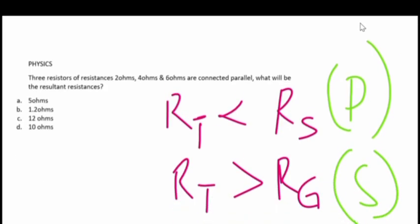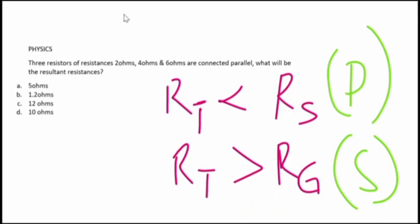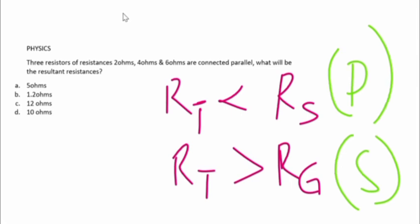Taking a look at the following questions, these questions will help us understand how we can rightly use the elimination method to solve past questions. This is a physics question: three resistors of resistances 2 ohms, 4 ohms and 6 ohms are connected in parallel. What will be the resultant resistance? When using the elimination method, at least you have to know something about the topic.